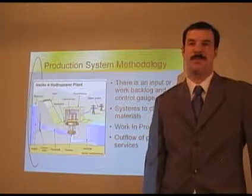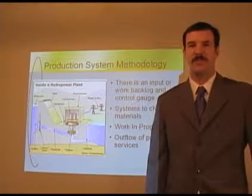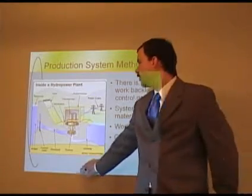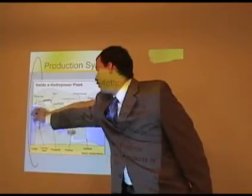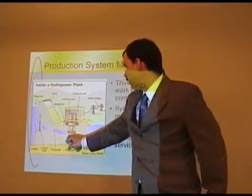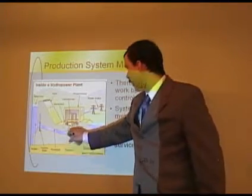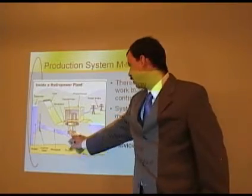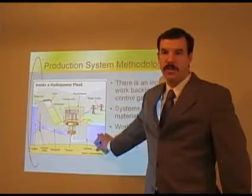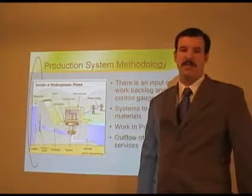Production system methodology. I use a turbine engine here as an example for operations, because it has all the elements of an operational system. It has an input area, which would be the reservoir, a control gate, and an input into the system — a system that has work in progress and makes change on that input — and then an output, which would be the outflow of a dam. So the turbine engine does an operational system justice in that it has all the elements.